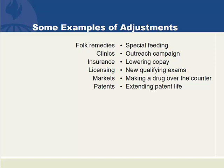Markets might make a drug over the counter rather than by prescription, and this would also alter its distribution through space. And patent systems can change the patent lifetime so that patents last for more years. These would be major adjustments.